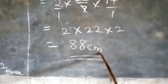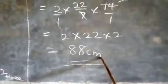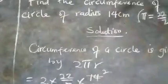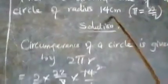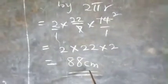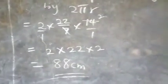So the answer is 88 cm. So the circumference of a circle that has the radius of 14 cm, the answer is 88 cm.